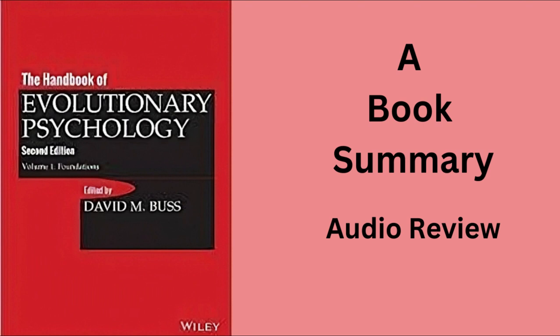In the adaptations of the mind, the author examines how evolution has shaped the human mind, discussing how the mind has adapted to solve specific problems such as survival, reproduction, and social interactions. He explores the evolution of various cognitive and emotional processes such as perception, memory, problem-solving, and decision-making. He also delves into the evolution of human emotions, including love, jealousy, and aggression, and how they shape human behavior.